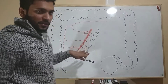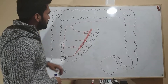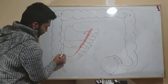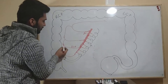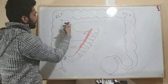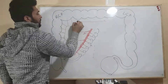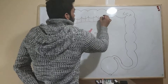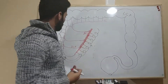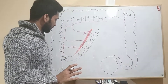All these branches have marginal arteries that go straight and deep into the large intestine to provide blood supply. This completes the information about the superior mesenteric artery.